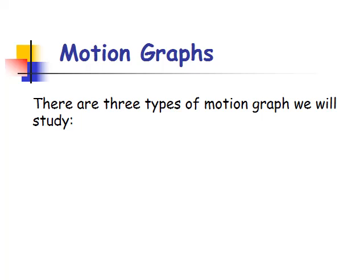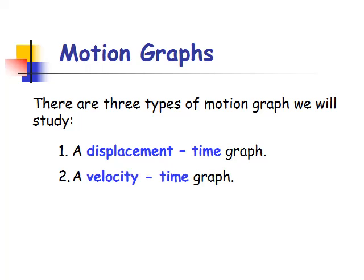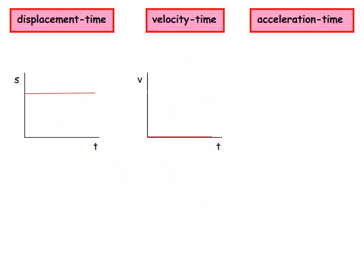There are three types of graph we're going to look at: displacement time graphs, velocity time graphs, and acceleration time graphs. Here's a displacement time graph showing that the displacement S is not changing over time, which means the object isn't moving — it's still at a certain displacement from the start. That means its velocity time graph is zero and its acceleration time graph is also zero.